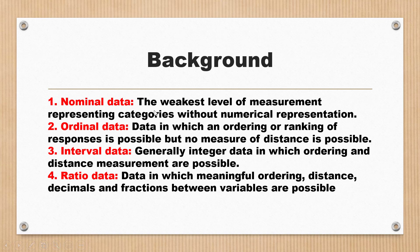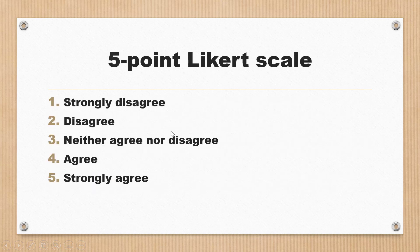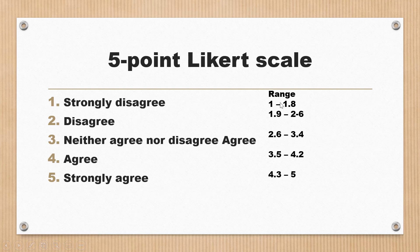Likert scale data can take either the form of ordinal data or even ratio data — so it can even be in the form of ratio data. For a five-point Likert scale, the range calculation logic is as follows: take five minus one equals four, divide four by five to get 0.8, then take one plus 0.8 which gives us 1.8.